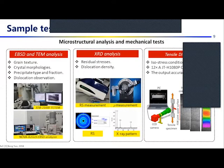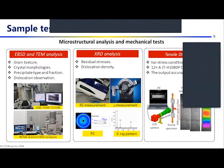For microstructural characterization, we use EBSD and TEM to observe grain texture, crystal morphology, precipitate fractions, and also to observe the dislocations. XRD analysis is used for the measurement of residual stresses and dislocation density. Tensile tests in cooperation with DIC methods are used for observation of global and local mechanical properties in the joints.